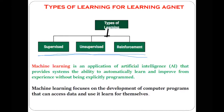Just like human beings learn from different ways and methods, in the case of machines there are different algorithms or methods using which the machine also learns. Now the first type is supervised learning — what do you mean by supervised learning as a type of machine learning?